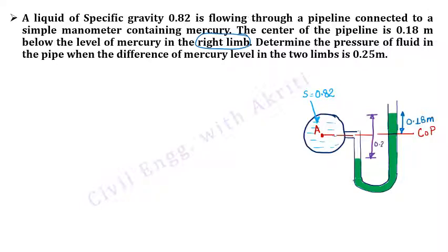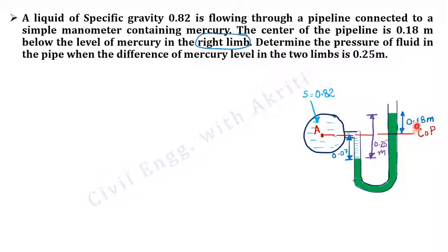Now, we need to determine pressure at A. To do that, I need to find this length. Total length was 0.25, minus 0.18, so we get 0.07 meters. This height from the mercury level to the center of pipeline is 0.07 meters, because 0.25 minus 0.18 equals 0.07 meters.